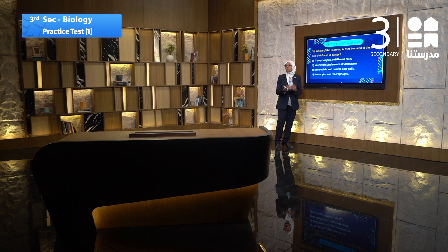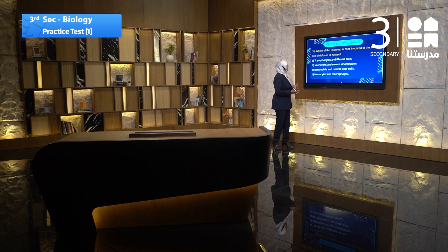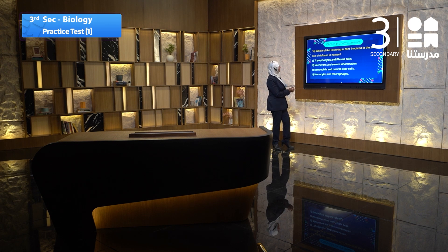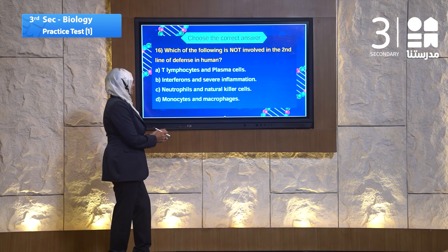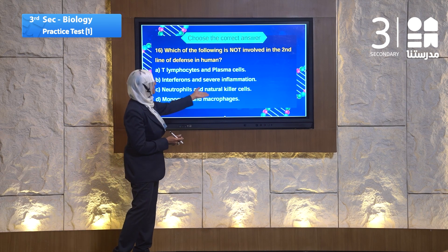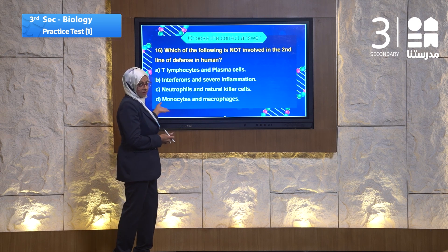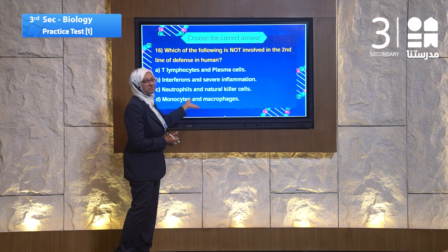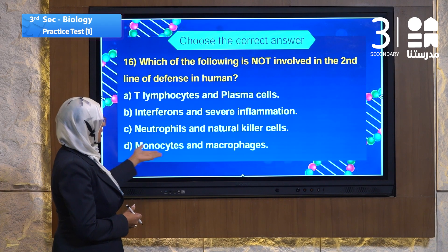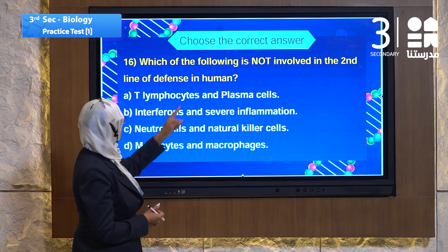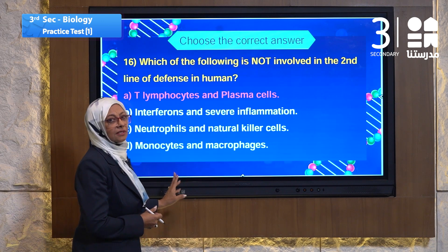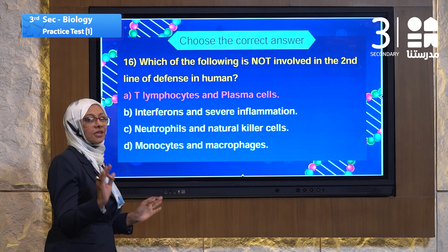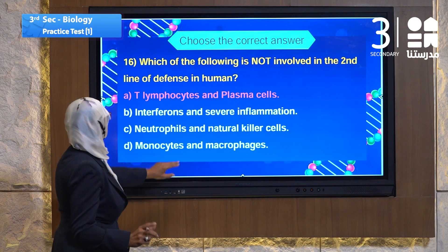The choices are: T lymphocytes and plasma cells; interferons and severe inflammation; neutrophils and natural killer cells; monocytes and macrophages. All of them are second line except the first one — T lymphocytes and plasma cells — which means those are third line, not second line.